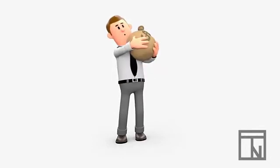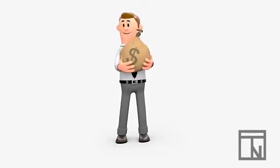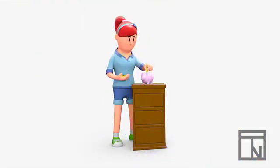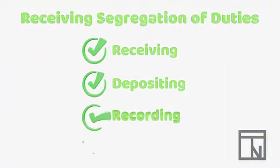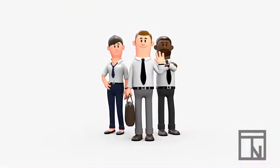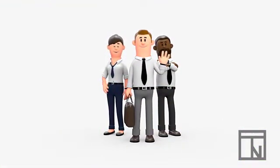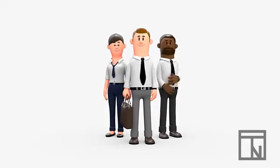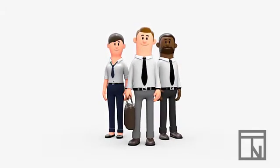Those are a few examples of controls for purchasing. Receiving also has similar controls. When a company receives money from customers, they want to ensure that an employee doesn't just keep the money for themselves. Once again, segregation of duties helps prevent this kind of fraud on the receiving side too. Some tasks that can be segregated and assigned to other employees include receiving the cash, recording the receipt, making the deposit, and reconciling the deposit with bank records. These are not always easy to split up among many employees, but if at least one of these steps can be given to another employee, the opportunity for fraud is reduced.